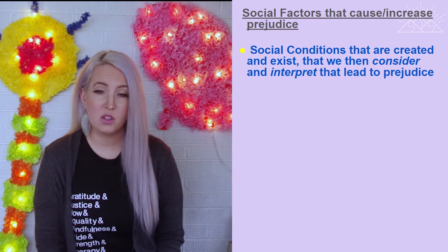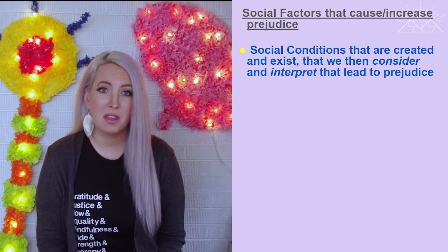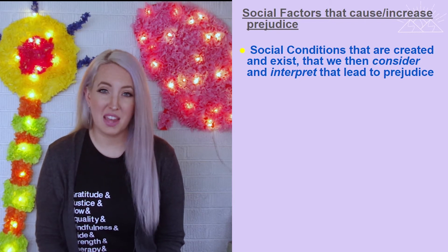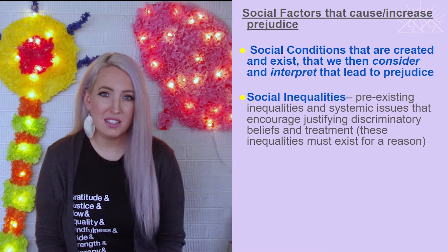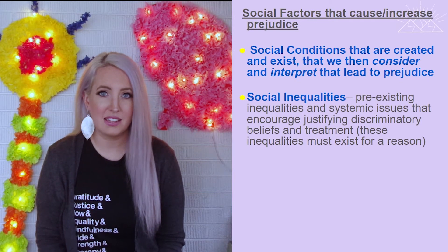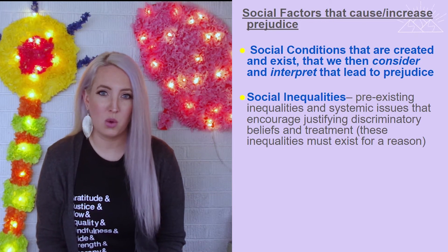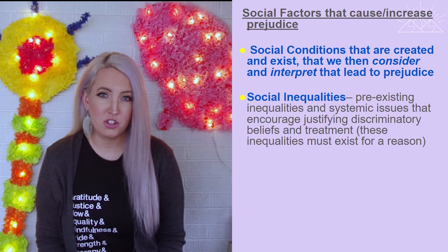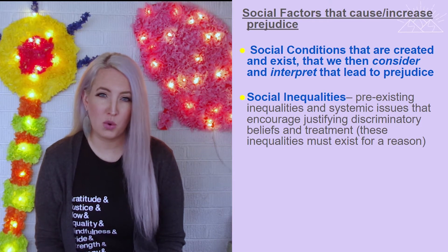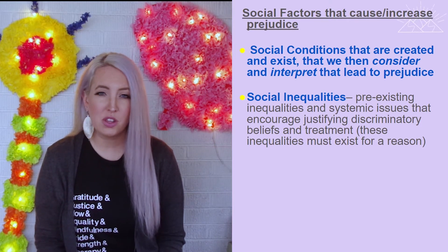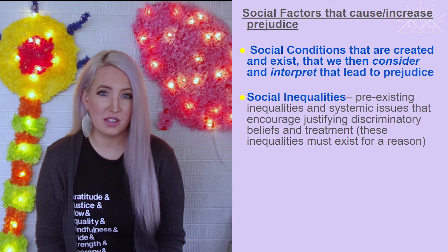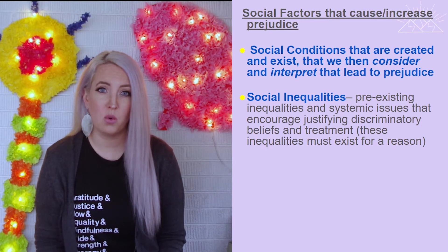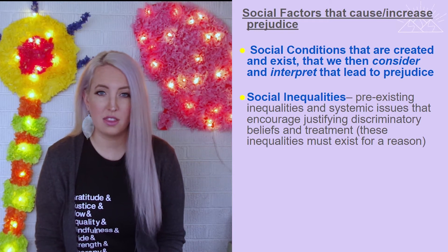A perfect example of a social factor is social inequalities — the systemic issues that exist in our society that weren't necessarily created by us, and yet we see them on a day-to-day basis. These social inequalities encourage or help justify discriminatory treatment towards groups of people. Essentially, it leads to the cognitive thought pattern that these inequalities must exist for a reason, which can create prejudiced thinking.